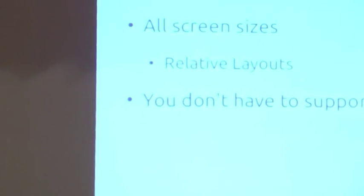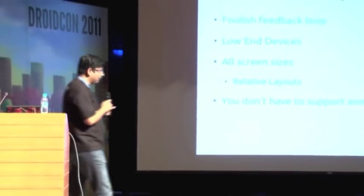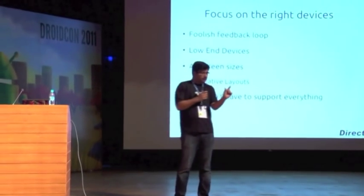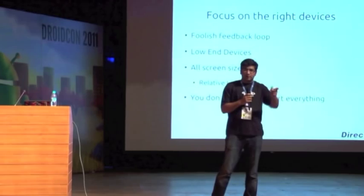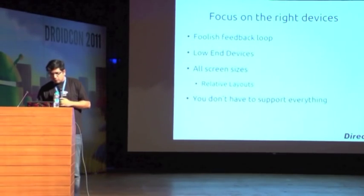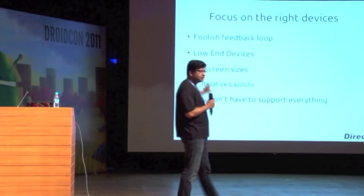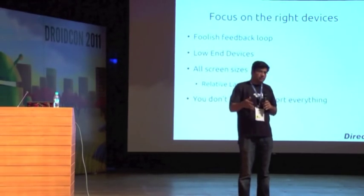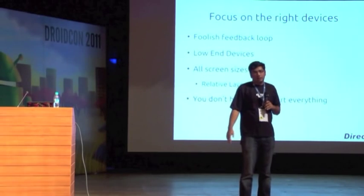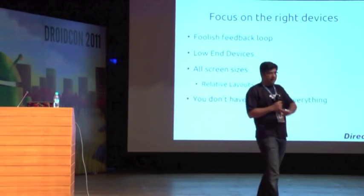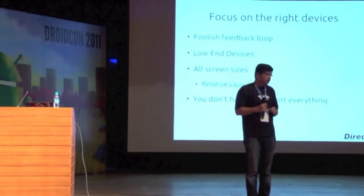You should use relative layouts — Google recommends that — because they scale across all screen sizes fairly well, whether it's a small device with a keyboard or the newest large device. And finally, you don't have to support everything. You can consciously decide to support only devices above a certain specification. It's a decision that most of us don't even think about, but you need to do this kind of thinking when releasing for Android — because anybody from a very low-end to a high-end phone could be using your software.